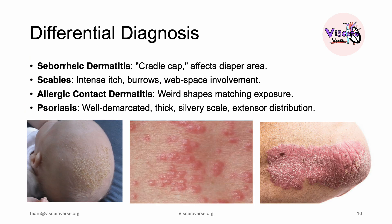One of the most challenging things in dermatology is differential diagnosis, because one disease can be mimicked by many others. An itchy rash does not always mean atopic dermatitis — it could be seborrheic dermatitis. Patients with seborrheic dermatitis present with a cradle cap in children, as shown in the picture, and it also affects the diaper area, which is typically spared in atopic dermatitis.